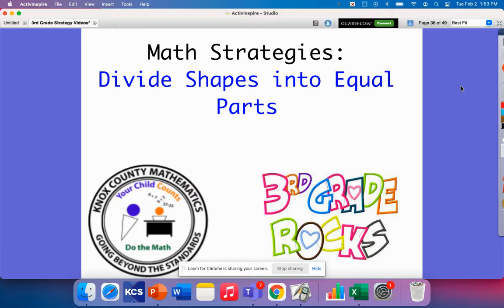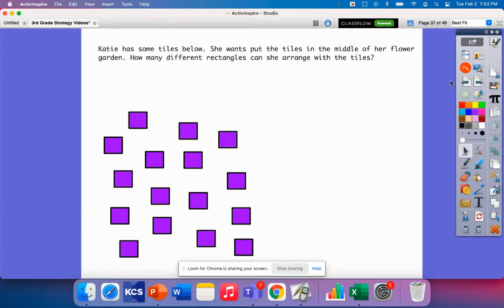Today's math strategy video is on dividing shapes into equal parts. Let's look at our first example problem. It says Katie has some tiles below. She wants to put the tiles in the middle of her flower garden. How many different rectangles can she arrange with the tiles?